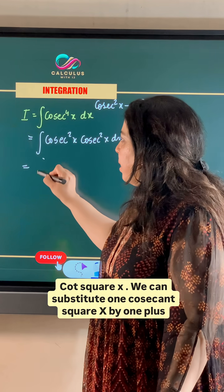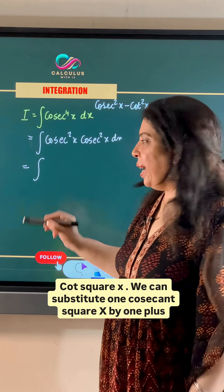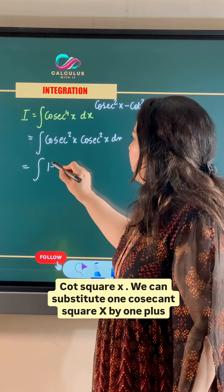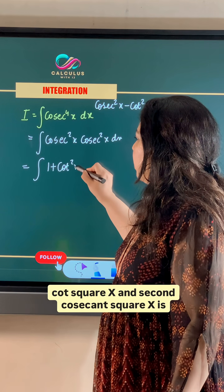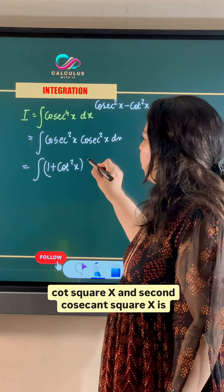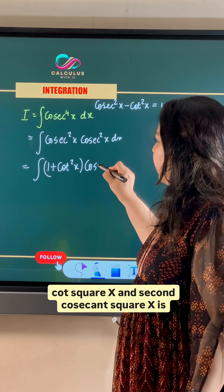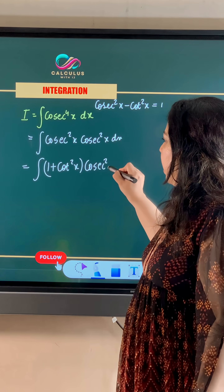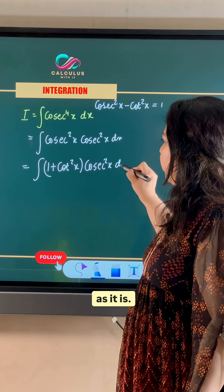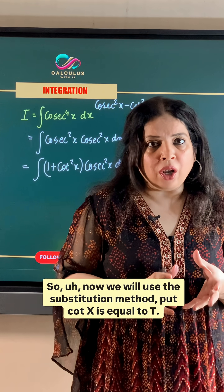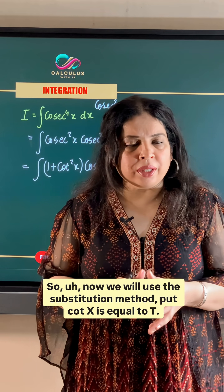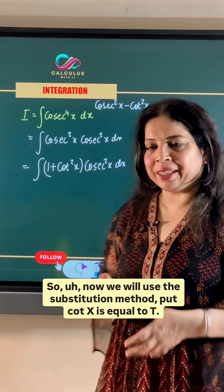We substitute one cosecant square x by 1 plus cot square x, and the second cosecant square x remains as it is. Now we will use the substitution method.